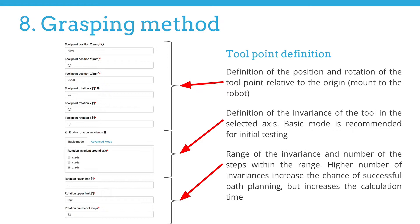The second section holds information about the definition of the invariance of the tool in the selected axis. The basic mode is recommended for initial testing. In this particular example, we use a tool which can be rotated around the z-axis. Hence, an invariance in the z-axis is selected.